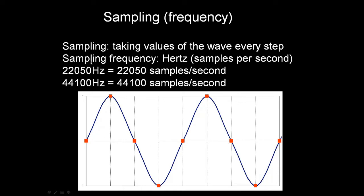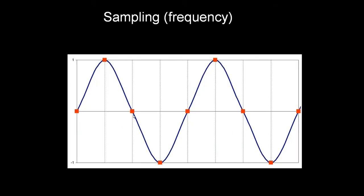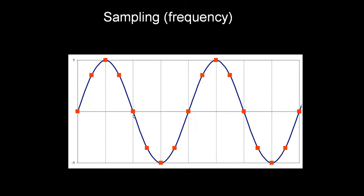The number of points is called the sampling frequency. It's measured in Hertz, which means samples per second. One Hertz is one sample per second. Here's an analog wave, the blue line, and we take some points.